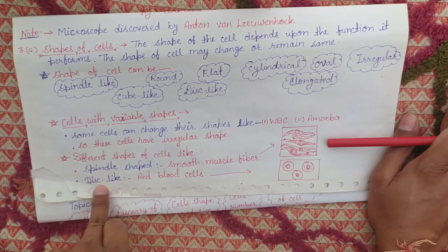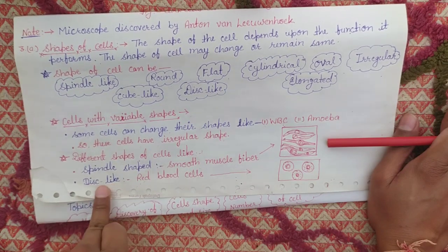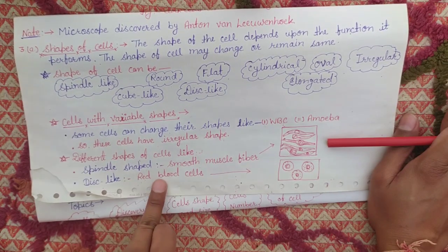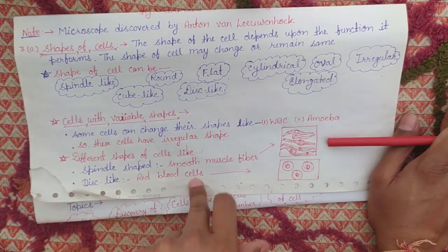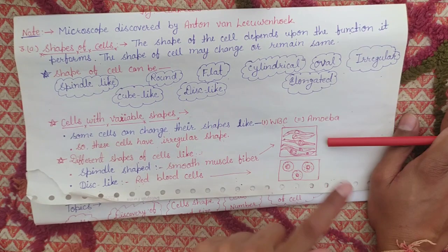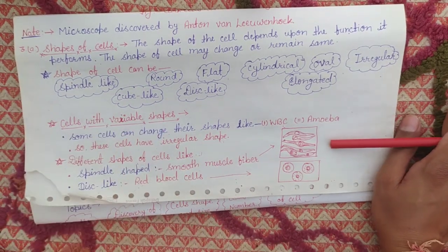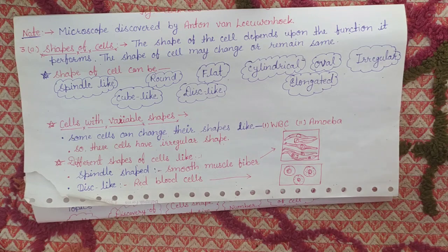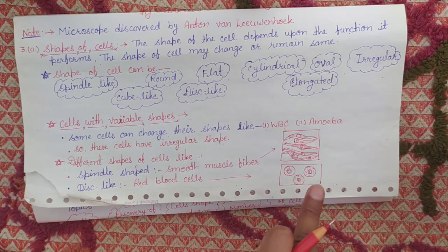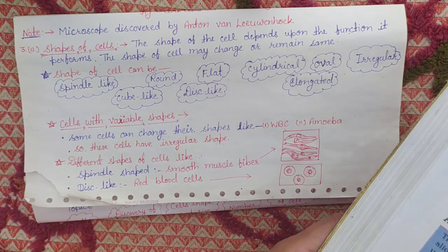Now you will see the next type of cell, which is disc-like. Disc-like cells are RBC — red blood cells. These red blood cells are shaped like a disc. That is the disc-like shape; the example is red blood cells. You may see this one properly in your book also. You can see from your book if you can't understand from here.